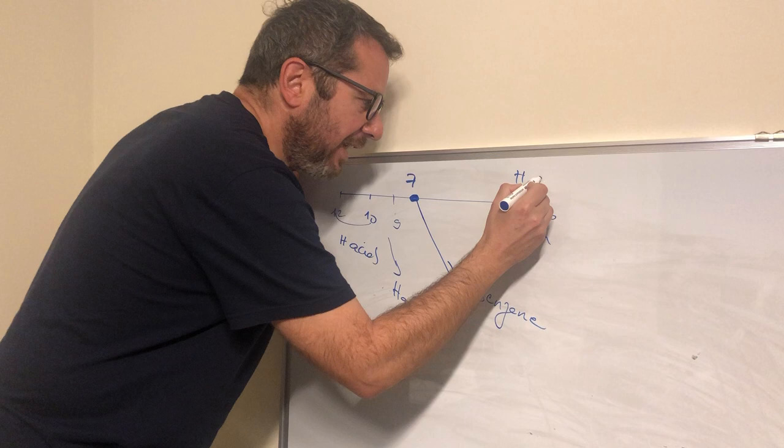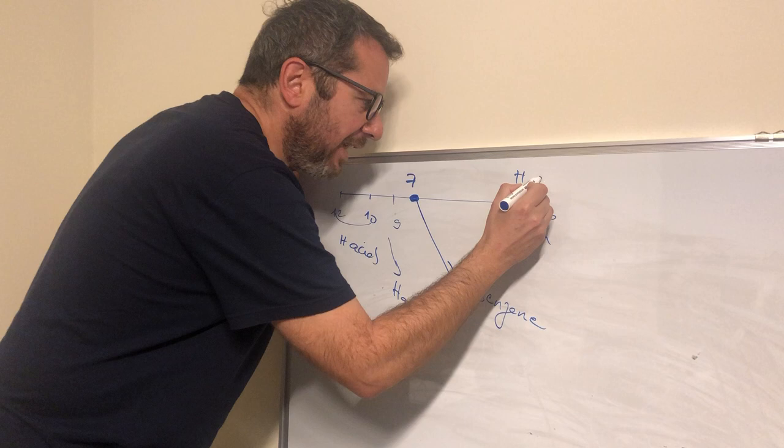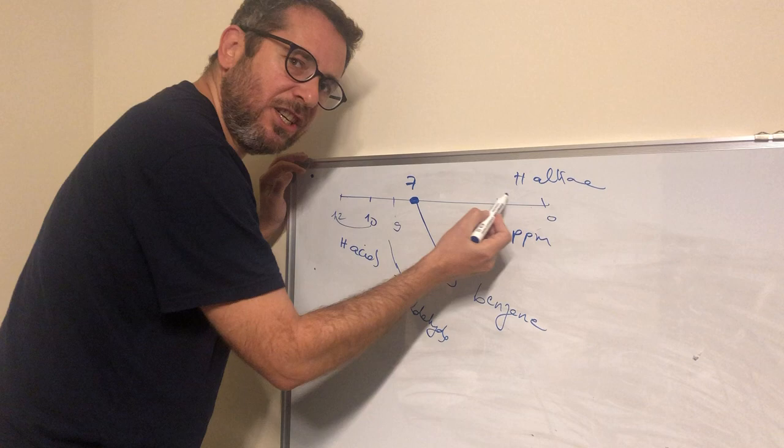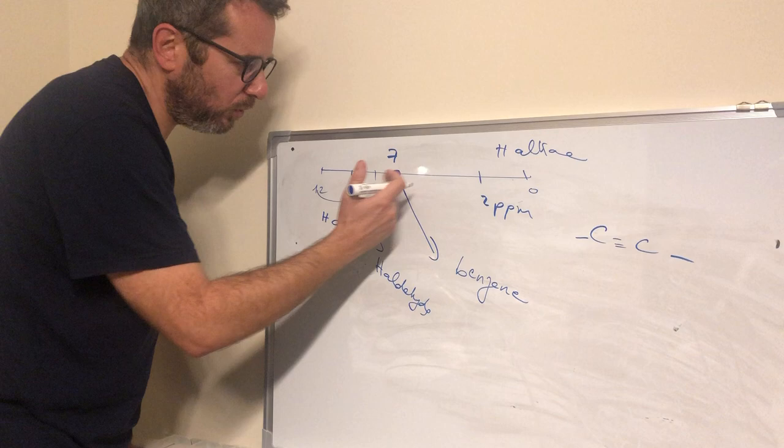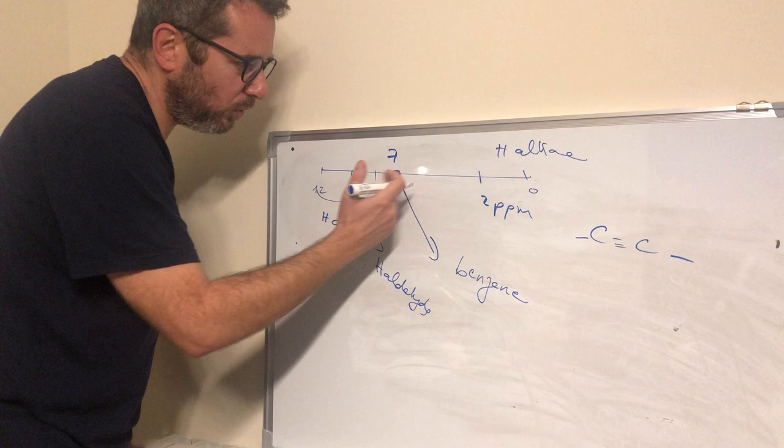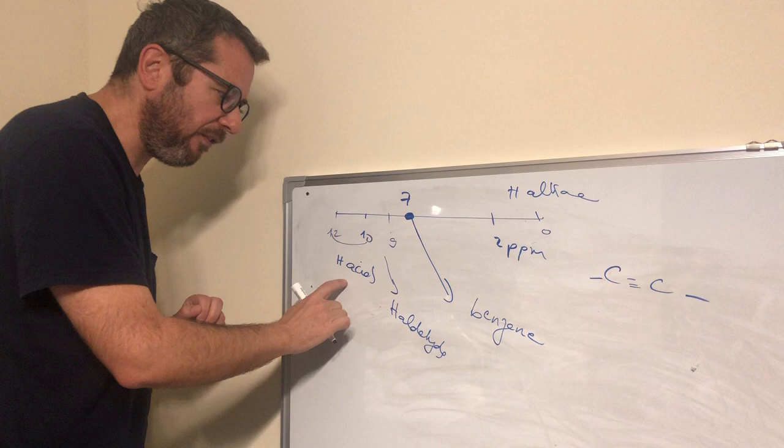Usually, between 0 and 2 ppm, we have the Hs of carbon-hybridized sp3 alkane. Usually, they appear in this order: CH3, CH2, CH. CH3 is closer to 0. You can see that the triple bond usually is around 2-3, while the double bond is around 4-5. The most important ones are H of acids, aldehyde, benzene, and Hs of alkane.